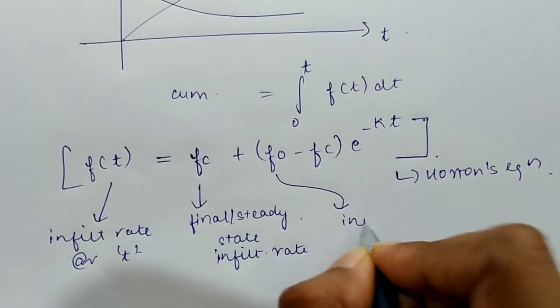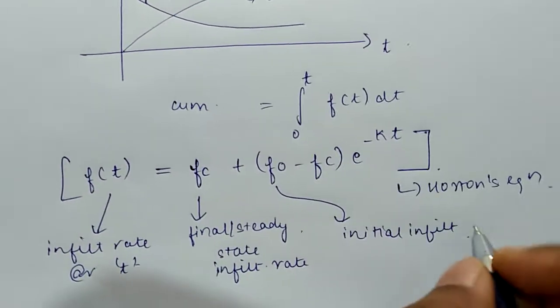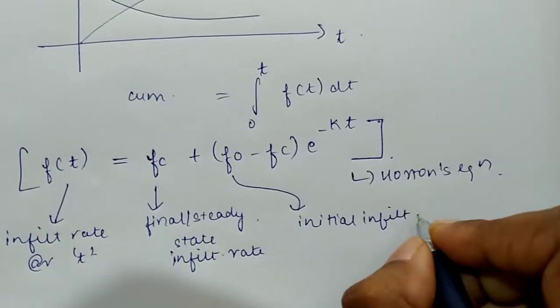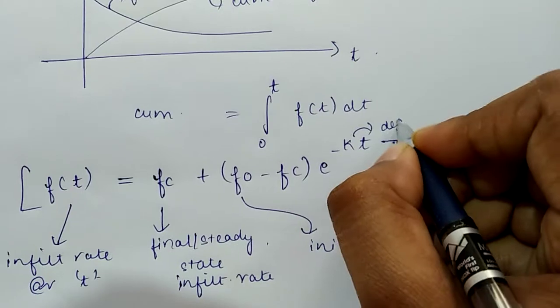f0 is the initial infiltration rate at the beginning of this storm, and k is the decay coefficient.